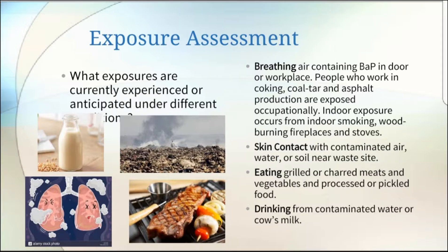Indoor exposure is common too. It occurs from smoking cigarettes and having either a wood-burning fireplace or stove. Another way to get exposed to Benzo-A-Pyrene is through skin contact with contaminated air, water, or soil near a waste site. The chemical can be absorbed into your skin, causing skin cancer. You will also be exposed to BAP if you eat grilled or charred meats and vegetables.